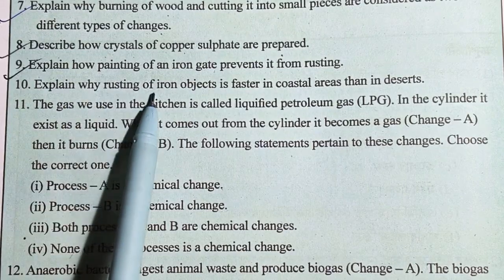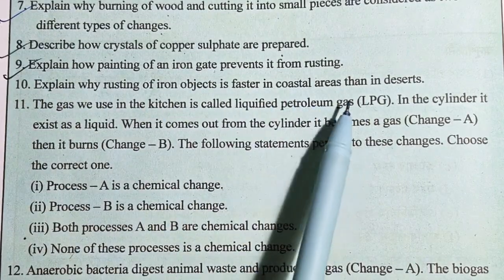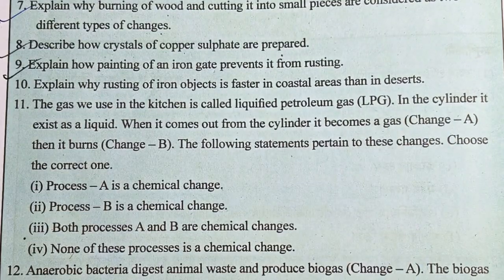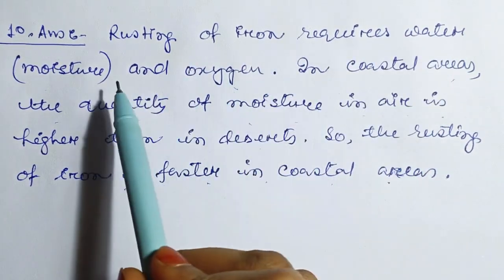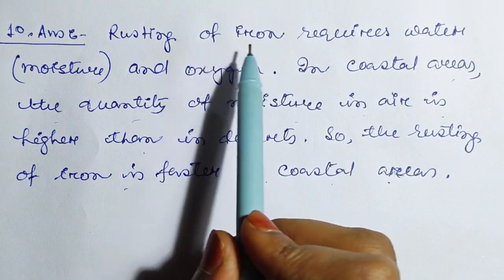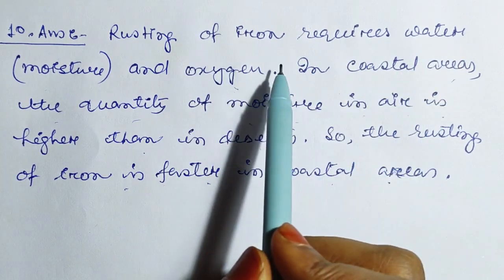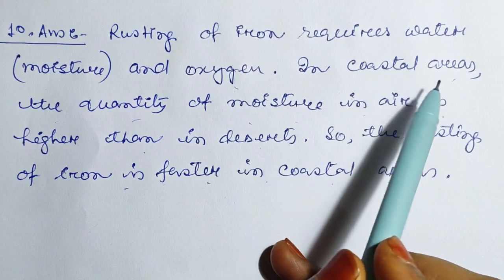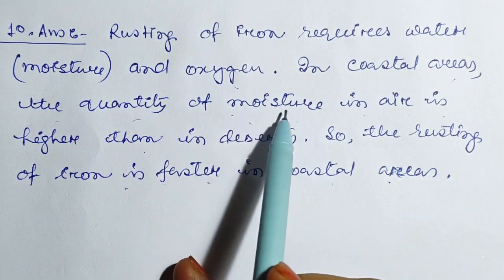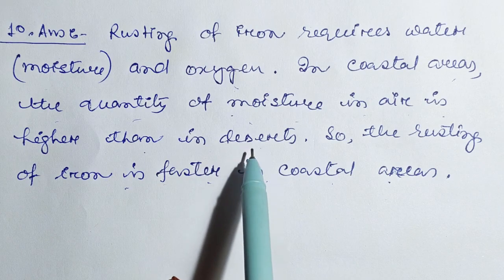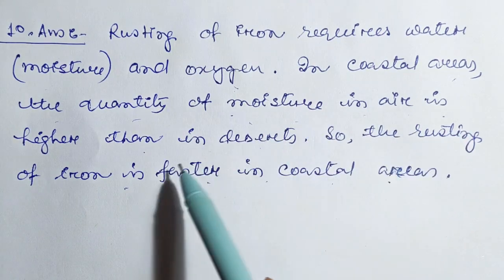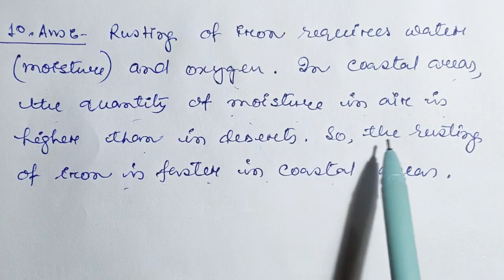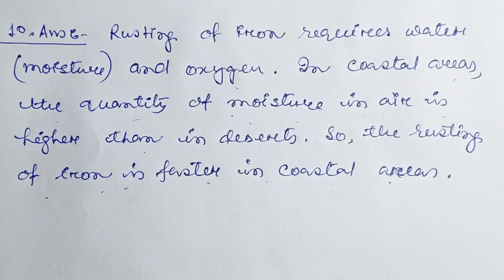Question number 10: Explain why rusting of iron objects is faster in coastal areas than in desert. Rusting of iron requires water, moisture, and oxygen. In coastal areas, the quantity of moisture in the air is higher than in desert areas. So the rusting of iron is faster in coastal areas.